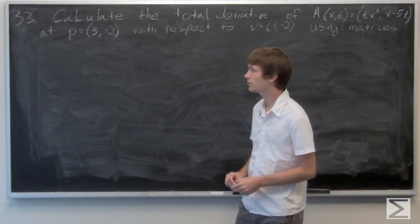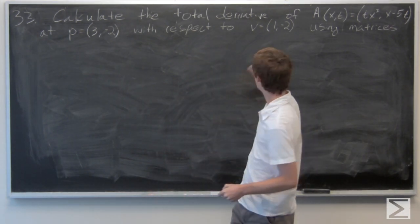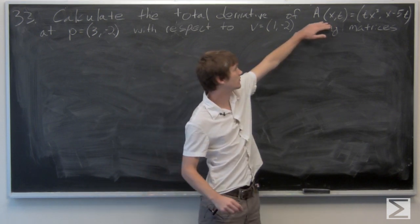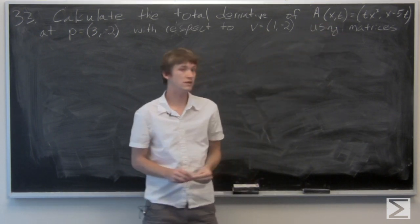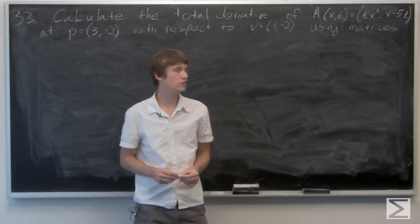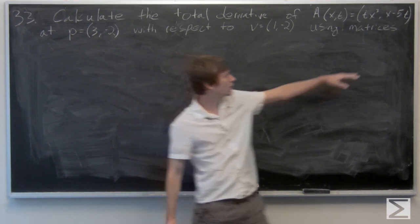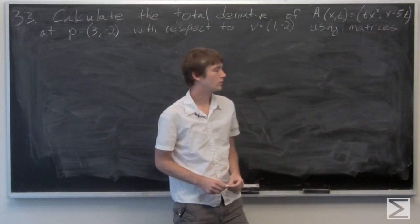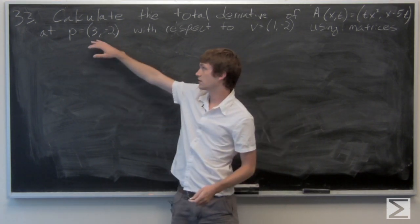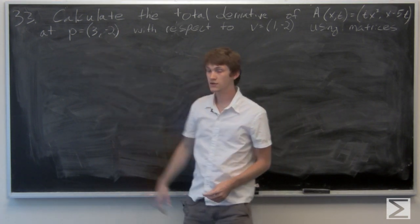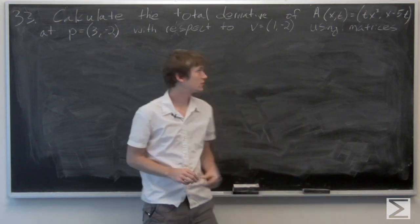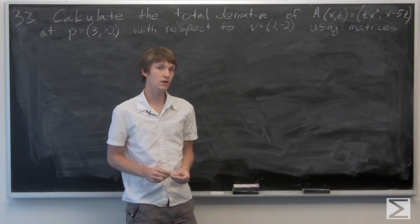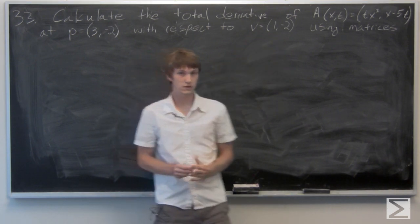In this problem, we're asked to calculate the total derivative of a function defined component-wise: a(x,t) equals t·x³ as the first component and x minus 5t as the second component, at the point (3, -2) with respect to the vector v = (1, -2). And we're going to do this using matrices.